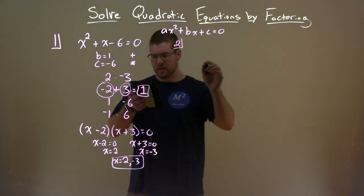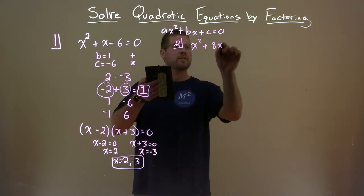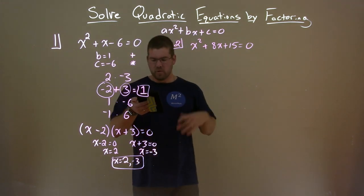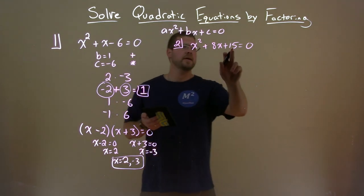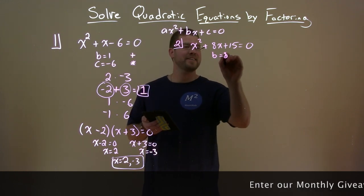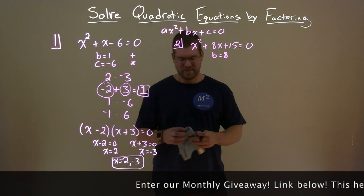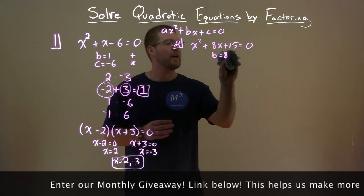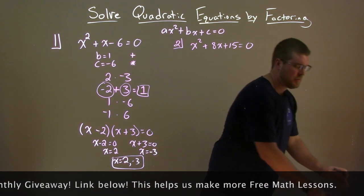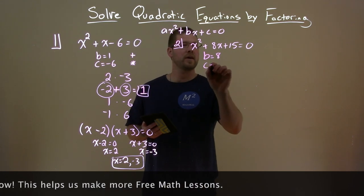Let's do number two: solve by factoring. x squared plus 8x plus 15 equals zero. The same property applies. Our b value equals 8 and our c value equals 15.